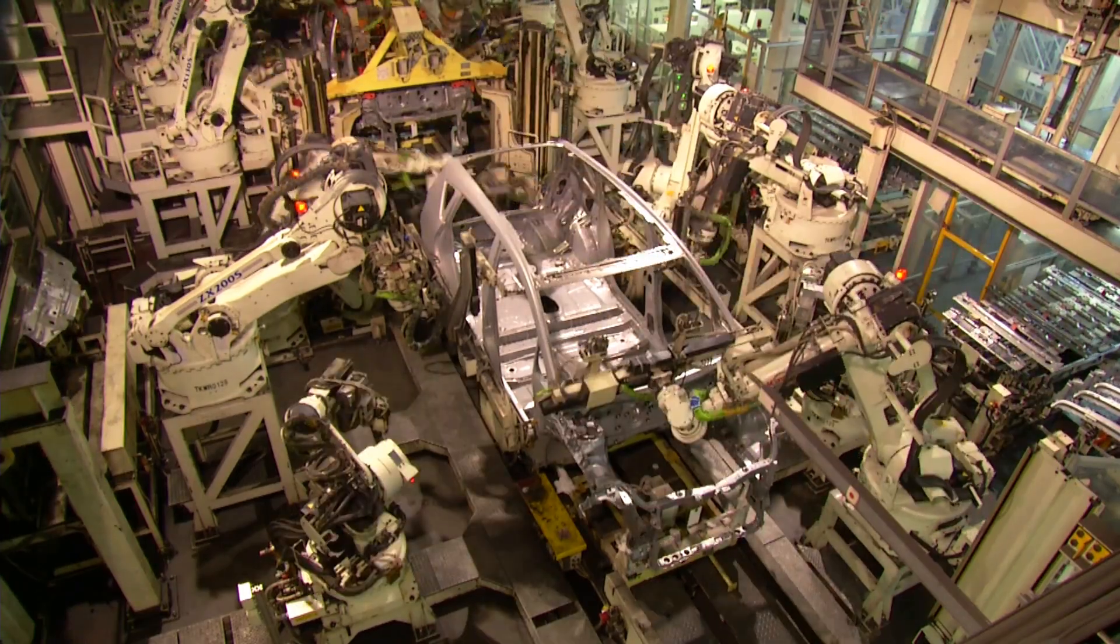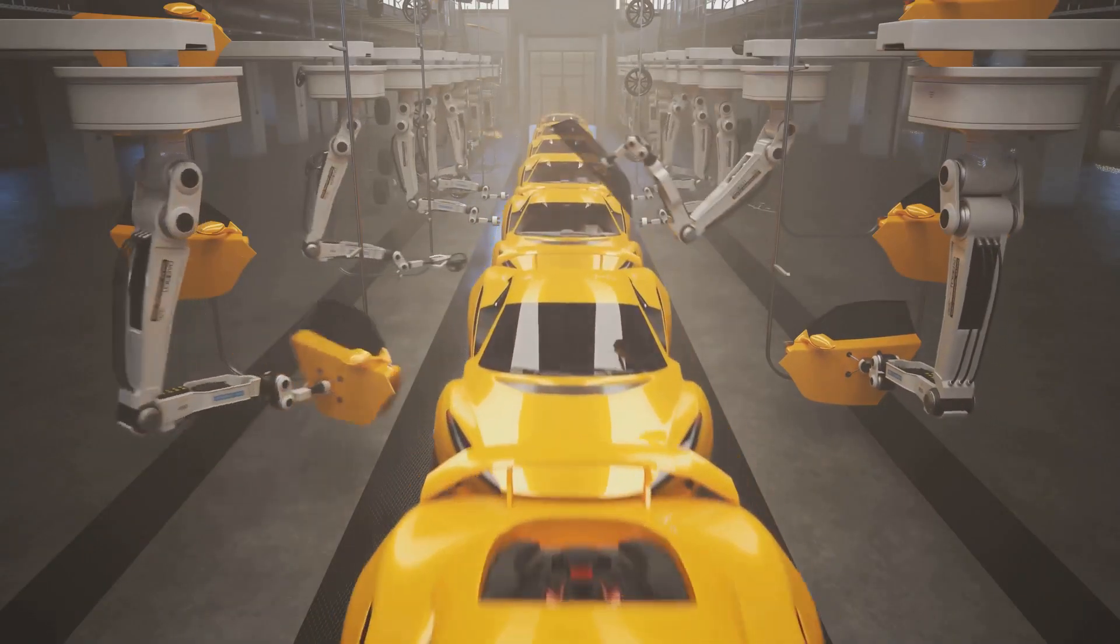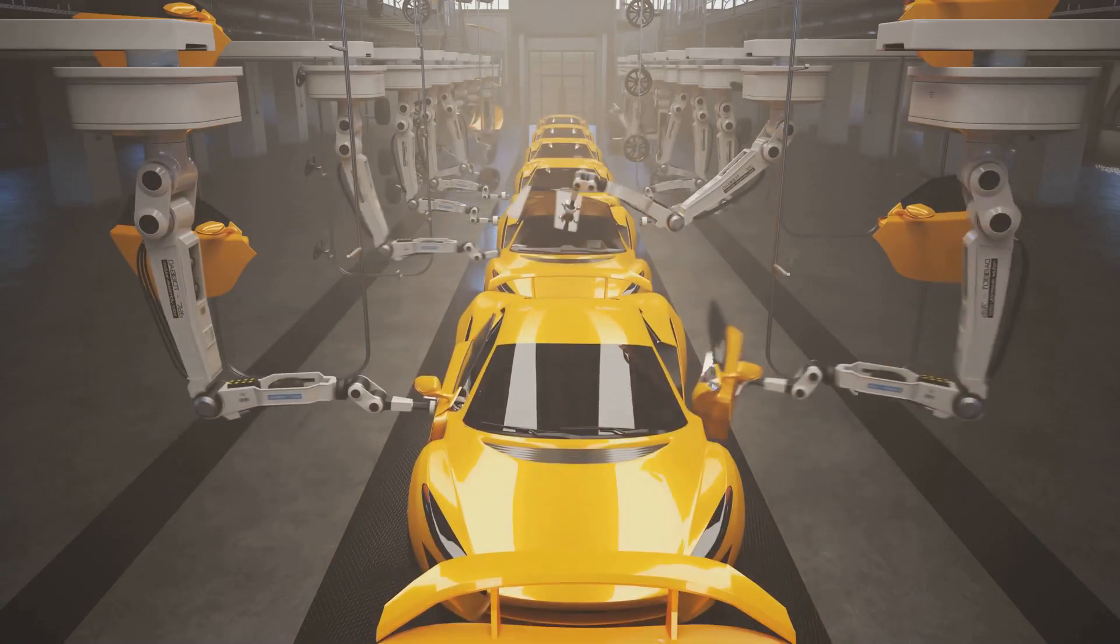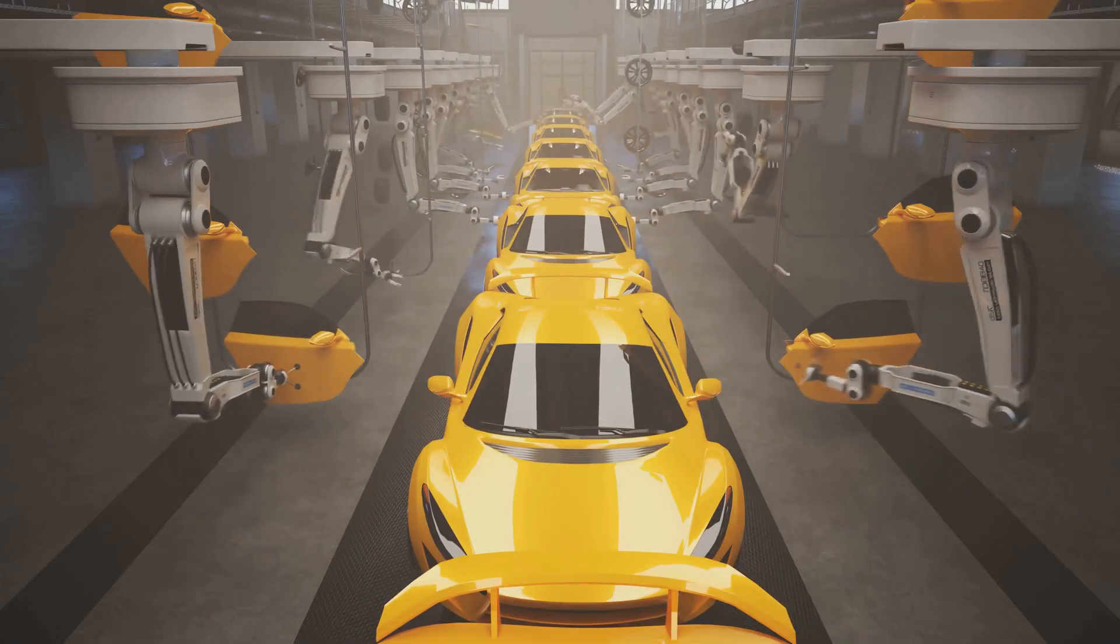A few years later, in 1961, Unimate made its debut on a General Motors assembly line, revolutionizing the manufacturing industry. But what about artificial intelligence?